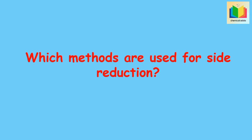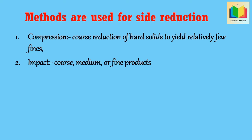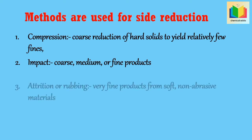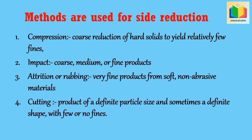Which methods are used for size reduction? For size reduction, various methods are used. The first method is compression, which is used for the coarse reduction of hard solids to yield relatively few fines. The next method is impact, which gives coarse, medium, or fine products. Attrition gives very fine products from soft non-abrasive materials. Cutting produces a product of a definite particle size and sometimes a definite shape, with few or no fines.